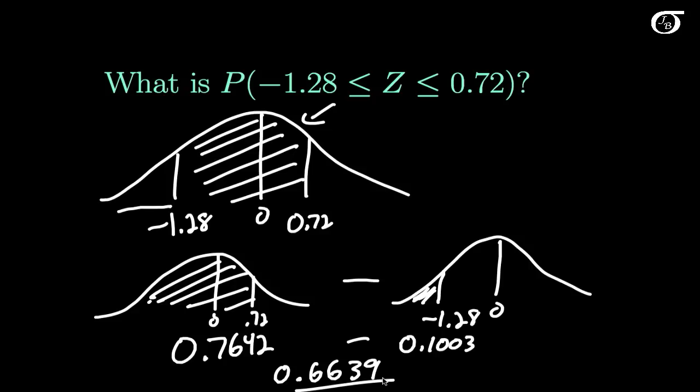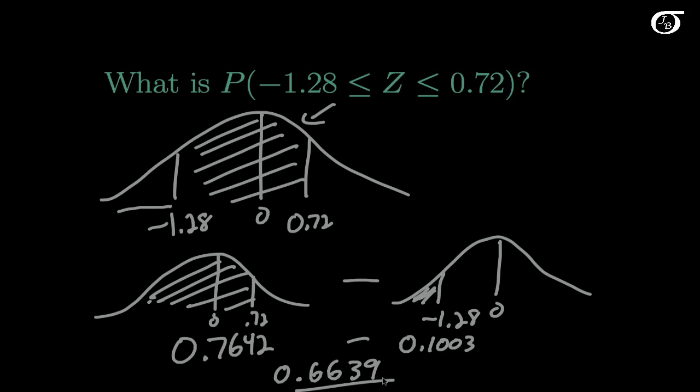Now that is how you find areas under your standard normal distribution using the standard normal table. Another type of question is when we have a given area, and we want to find the Z value that makes that happen. You might be able to figure that out on your own, but if not, I do have a separate video for that.